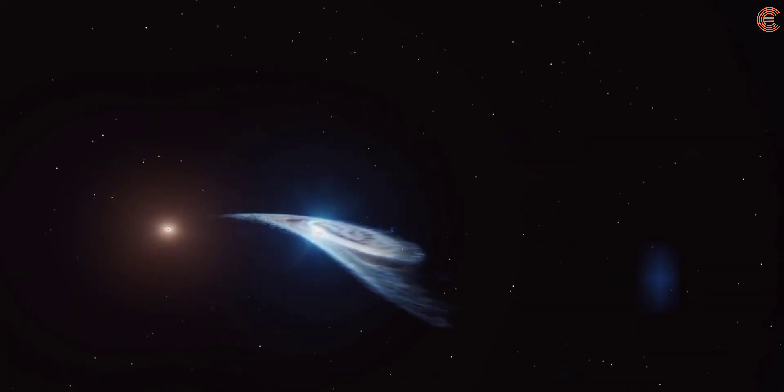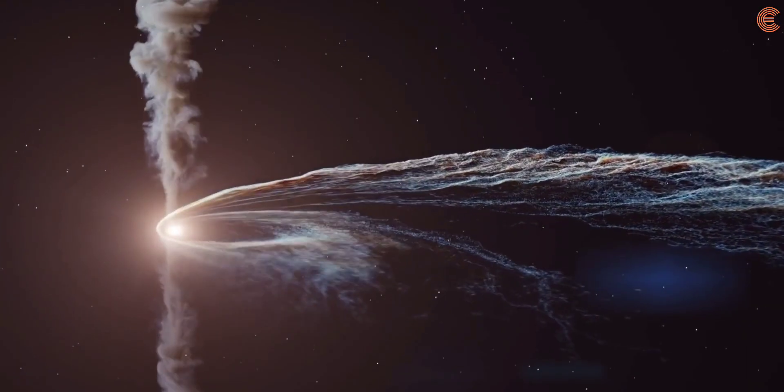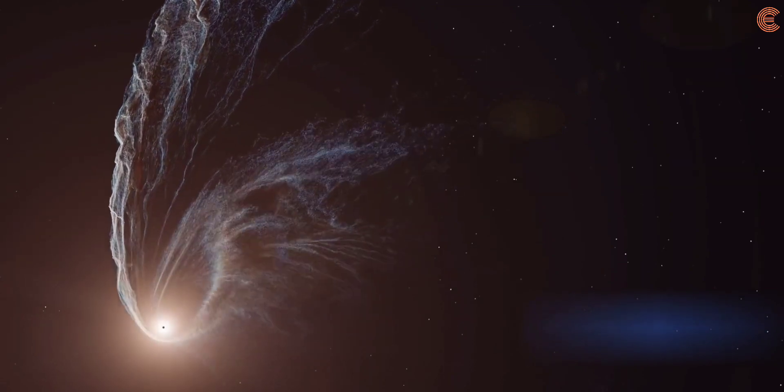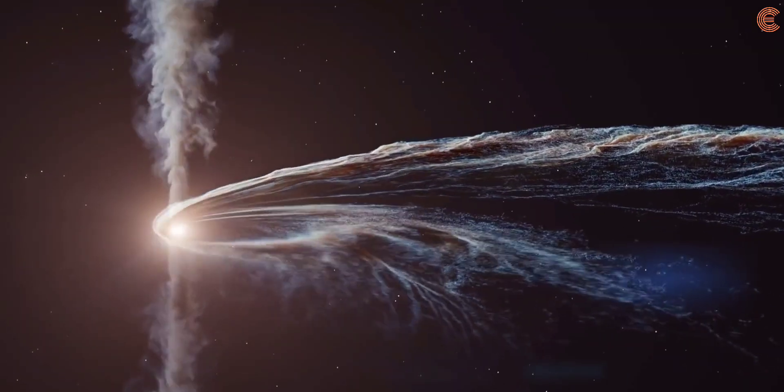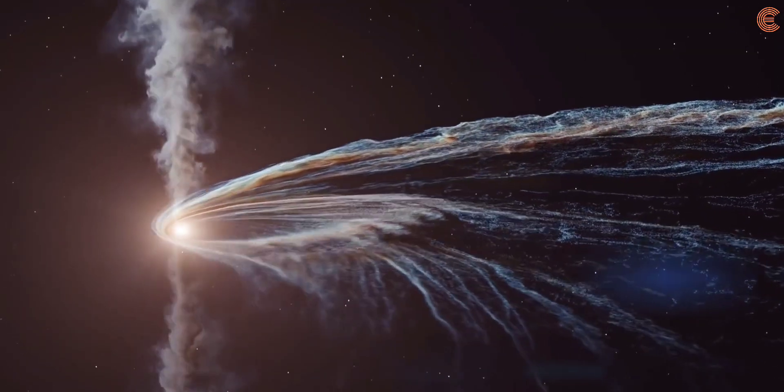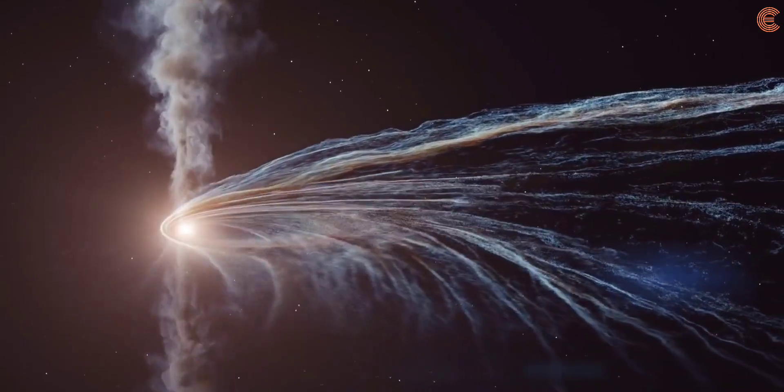Technically, a black hole doesn't have a magnetic field on its own, but the dense plasma surrounding the black hole as an accretion disk does. As the plasma swirls around the black hole, the charged particles within it generate an electrical current and magnetic field.